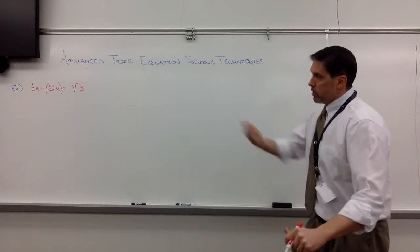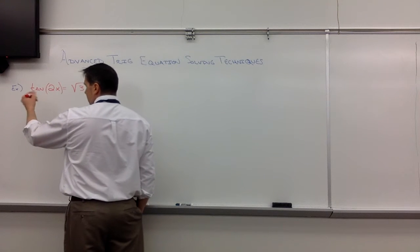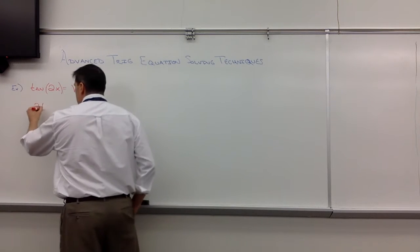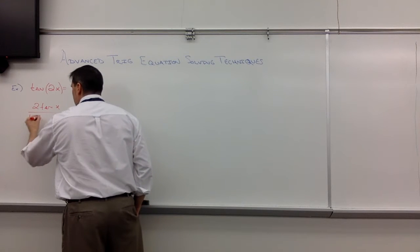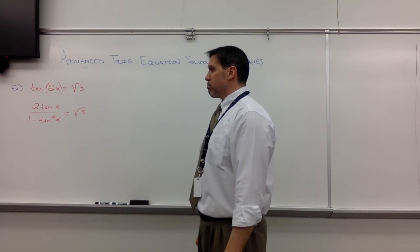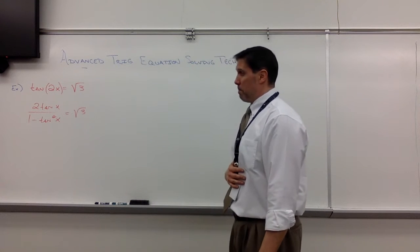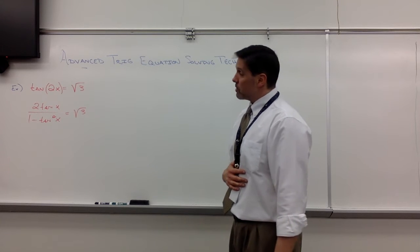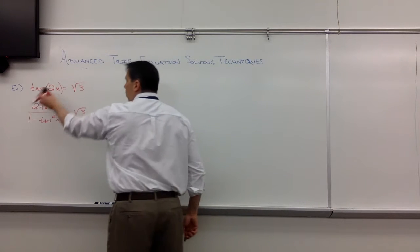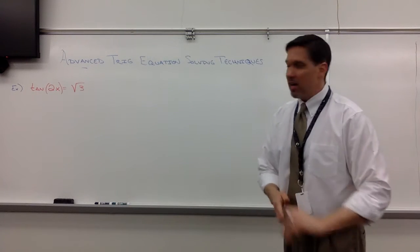So we have tangent of 2x equals the square root of 3. Now, we do have a tangent double angle formula, but I don't think that that's really what we want here. You know, the 2 tan of x over 1 minus tan squared x equals the square root of 3. That could work. I suppose if you cross multiply and then factored, that might actually work. I don't want to think about it, though. Because what if this is a 3 or a 4 or a 5? Not going to happen. So I'm thinking maybe I don't want to do a tangent double angle here.